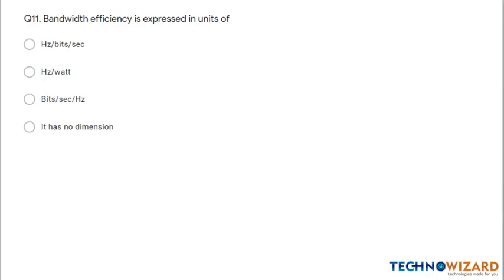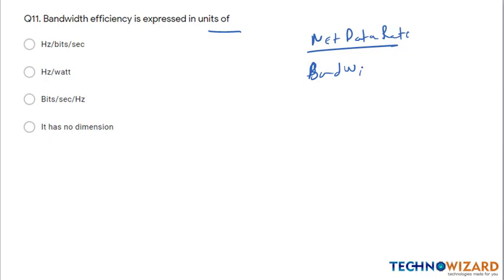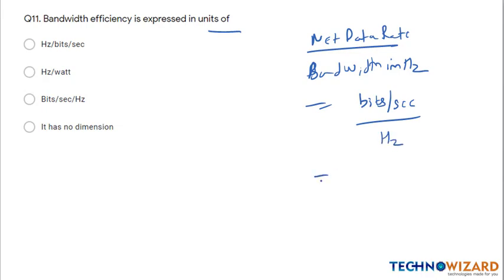Question 11: What is the unit of bandwidth efficiency? Bandwidth efficiency = net data rate / bandwidth in Hertz. Net data rate is in bits per second and bandwidth is in Hertz, so the SI unit of bandwidth efficiency is bits per second per Hertz (bps/Hz). Option C is the correct answer.